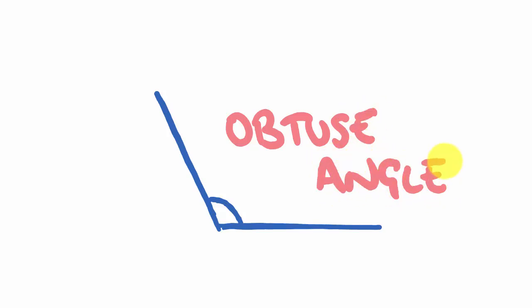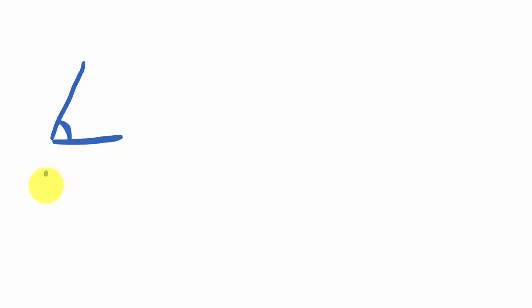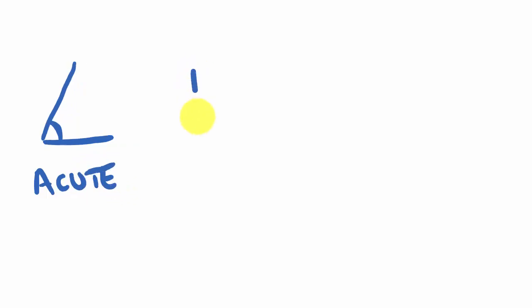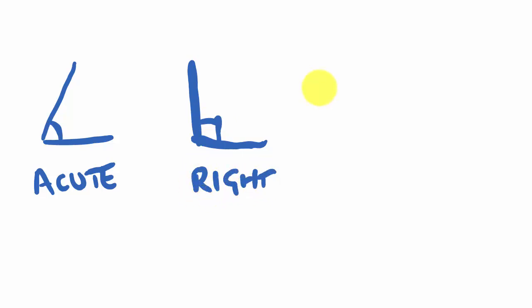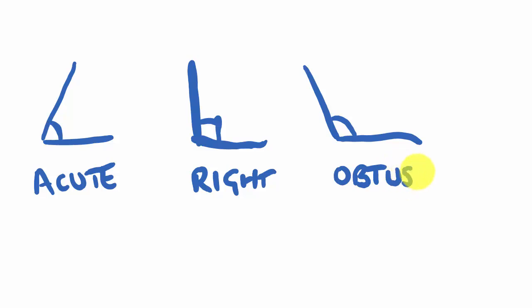Let me draw these freehand so you can remember them. First, angles under 90 degrees — these are acute, and the way to remember is they're small and cute. Then we have the right angle, nice and square like the edge of a square. And then we have the obtuse angle, which is bigger than 90 degrees. So those are our first three types of angles.